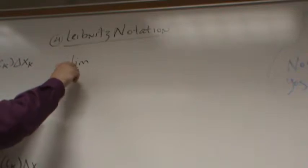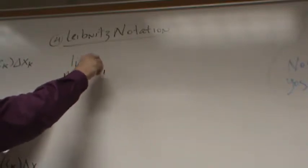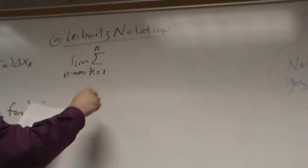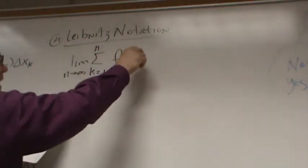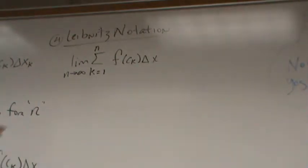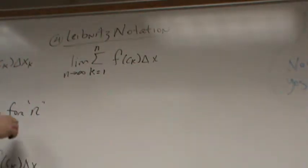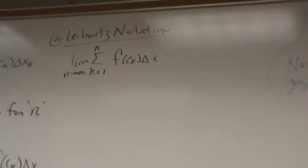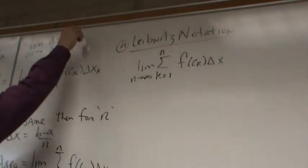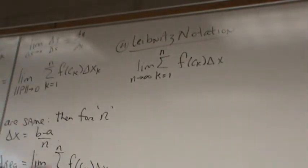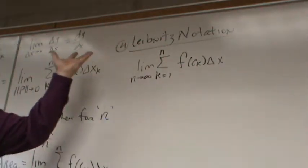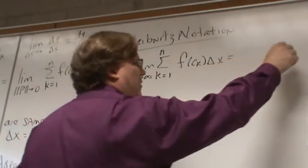The limit as n goes to infinity of the sum as k goes from 1 to n of f of C sub k times delta x — because n is going to infinity, delta x is going to 0. Just like with derivatives, when we have the limit as delta x approaches 0 of delta y over delta x, the deltas magically turn into d's and it becomes dy/dx. The same thing happens here: that delta x magically turns into dx.